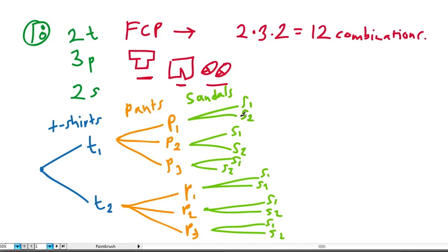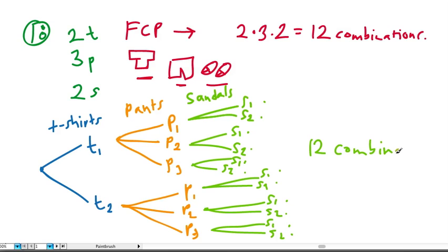This shows all of the choices he could have — all 12 combinations. For example: t-shirt 1, pants 1, sandals 1; or t-shirt 1, pants 1, sandals 2. Counting the endpoints: 1, 2, 3, 4, 5, 6, 7, 8, 9, 10, 11, 12 — and again, 12 combinations. It's very important that we label them and show the different options within each category.